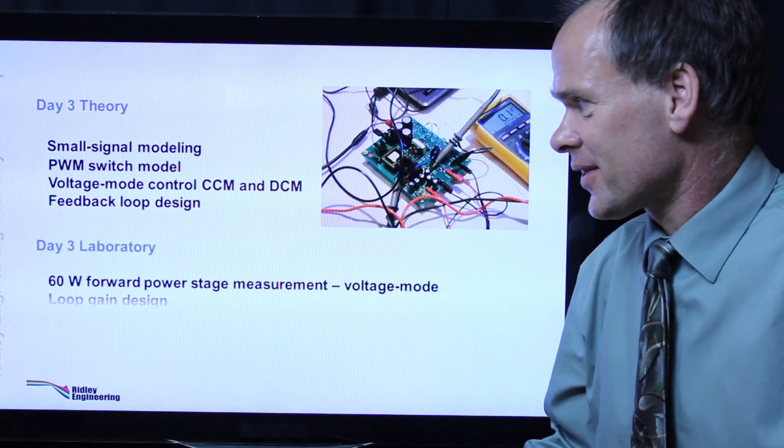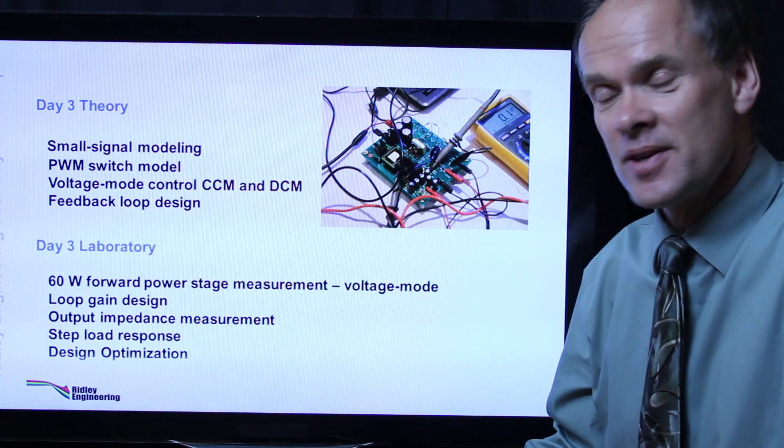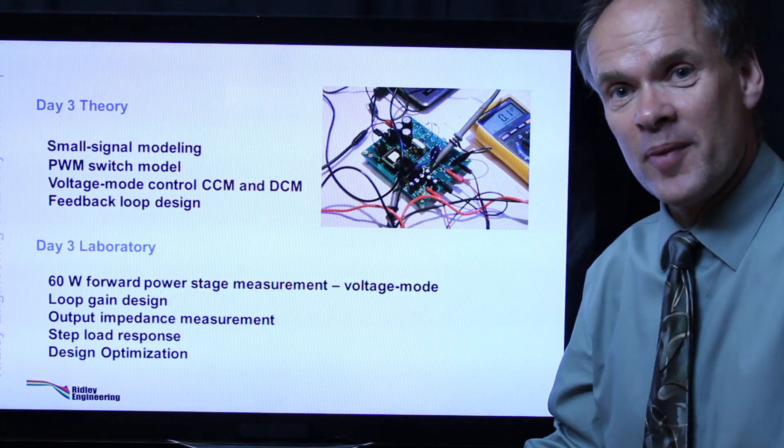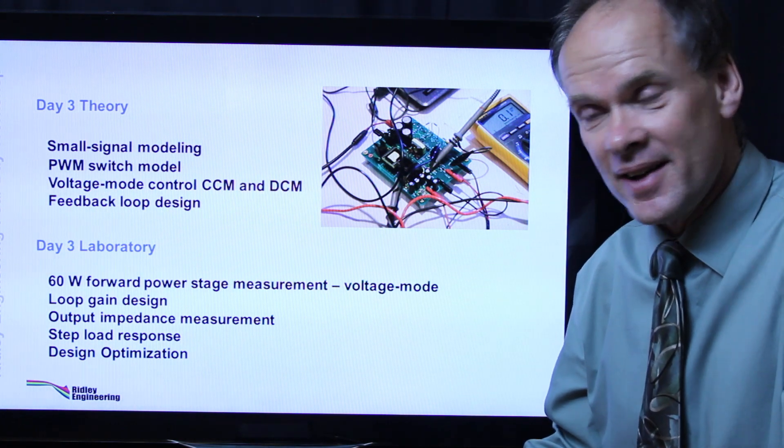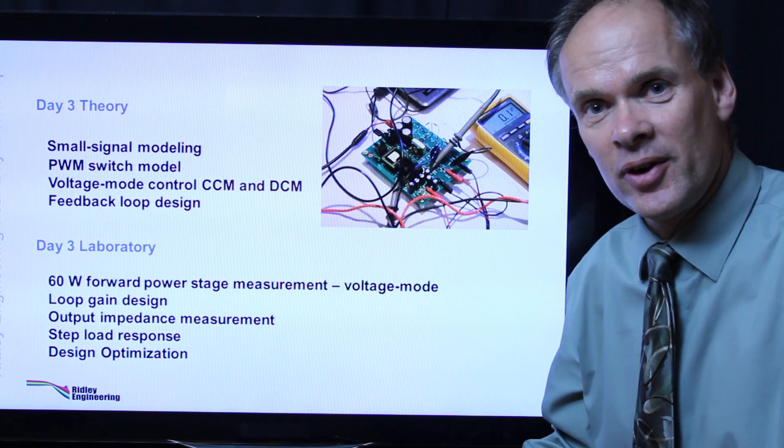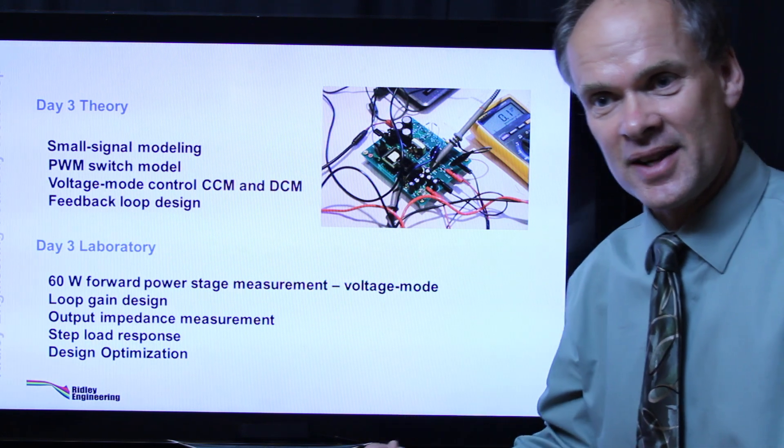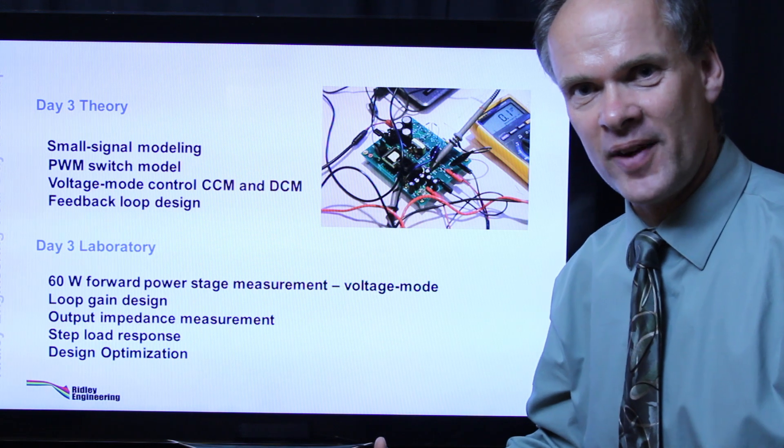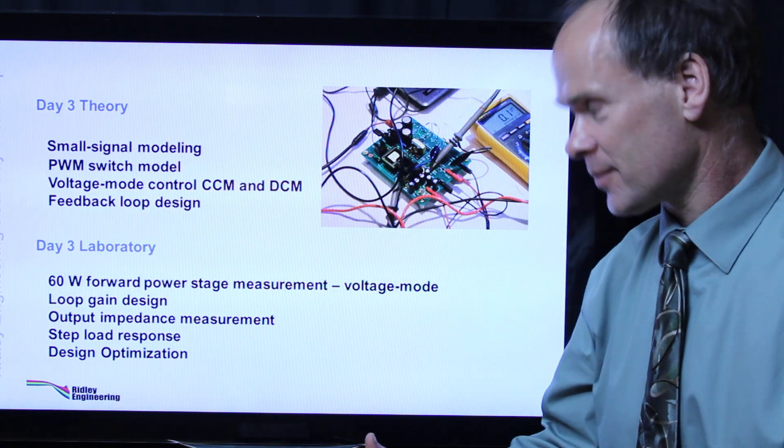Afternoon lab on day three we'll continue with the 60 watt forward converter. You'll design the loop gain components after you've measured the power stage and characterize that. Then you'll look at the output impedance, step load responses, and you go through optimization processes to find if you can get better performance while having reasonable phase and gain margin in your system.